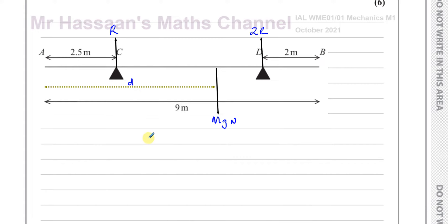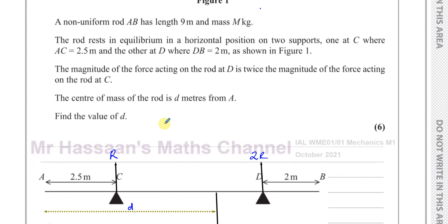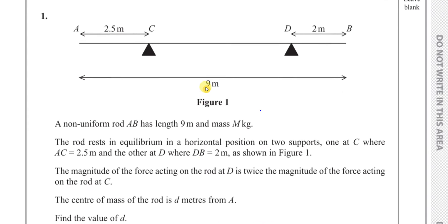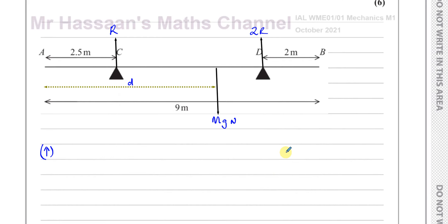We can set up an equation resolving the forces vertically. Now there's no weight resting on this, it's only the weight of itself. So we can say R plus 2R is equal to Mg. That's one equation we can make from this. So 3R is equal to Mg. That's one thing.